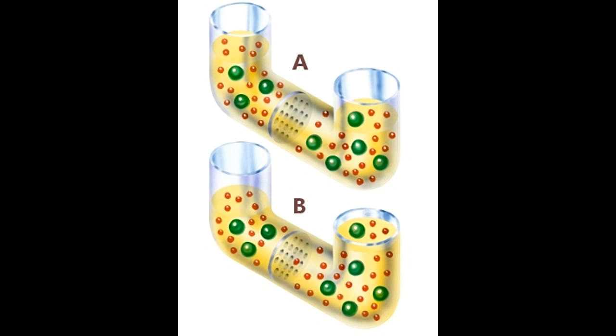Understanding osmotic pressure: As seen in the image, two states of a solution are shown. A shows the initial condition, where the solution is in an unstable state. B shows the equilibrium state. The U-tube contains a solution in both compartments separated by a semi-permeable membrane at the center. The green spheres indicate molecules of the solute, whereas the red ones indicate those of the solvent.